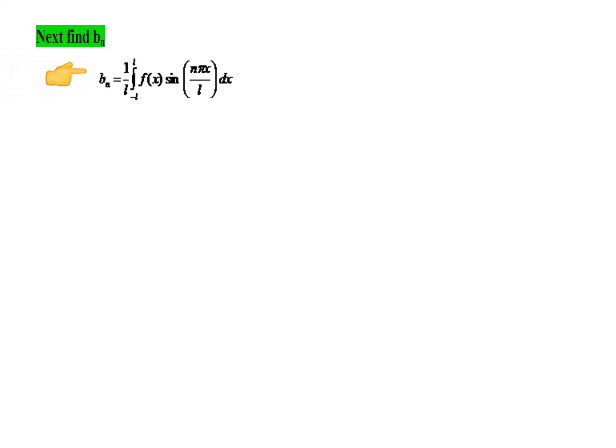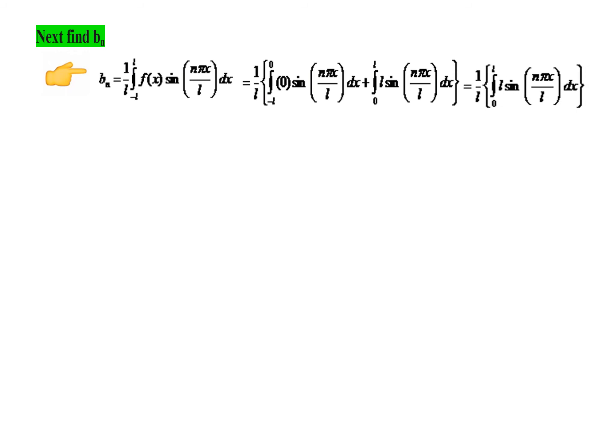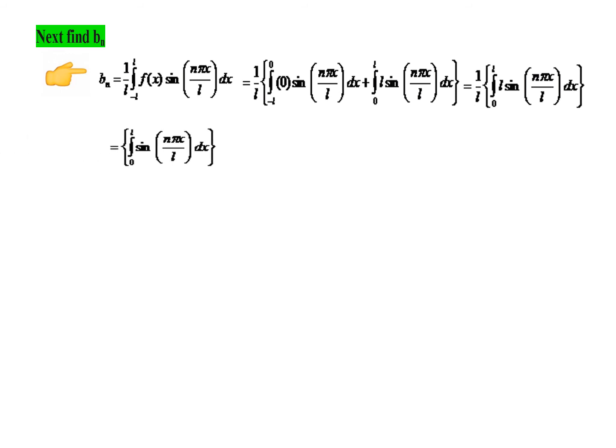Similarly, let us find the last Fourier coefficient Bₙ. The formula for Bₙ involves splitting the integral into two halves: from −L to 0 the function is 0, and from 0 to L the function is L, giving L · ∫₀^L sin(nπx/L) dx. Again L and L cancel, and integrating sin gives −cos(nπx/L) ÷ (nπ/L).